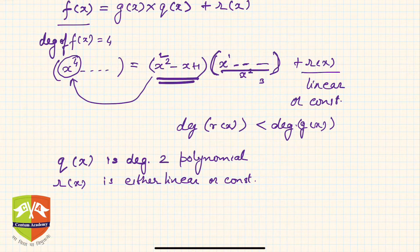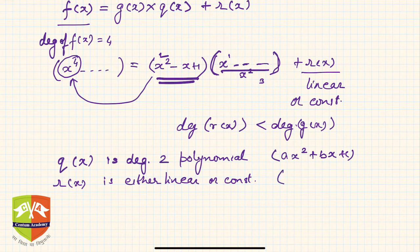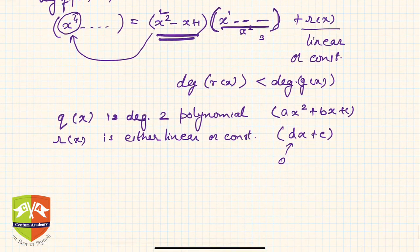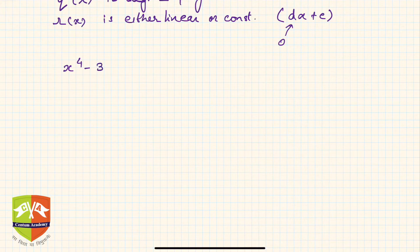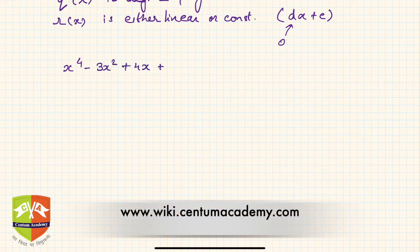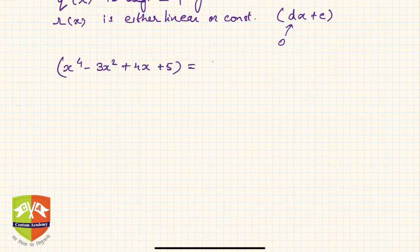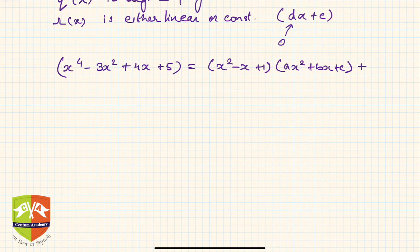If q(x) is a degree-2 polynomial, let's write it in standard form: q(x) = ax² + bx + c. And let r(x) = dx + e as a linear polynomial. If it turns out to be constant, then d will come out to be 0. So let me rewrite the entire expression: x⁴ - 3x² + 4x + 5 = (x² - x + 1)(ax² + bx + c) + (dx + e).